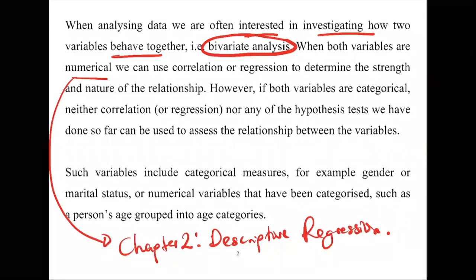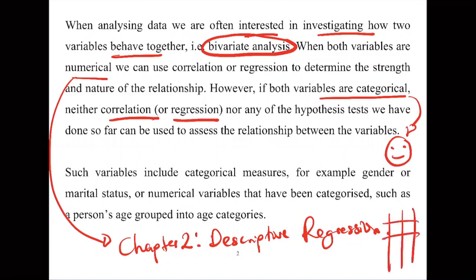However, if both variables are categorical, we have not covered that yet. We can't use correlation and regression because those require numerical x and y values. An example of a categorical variable from Chapter 1 is t-shirt size: small, medium, large — a variable whose levels can be classified into categories.